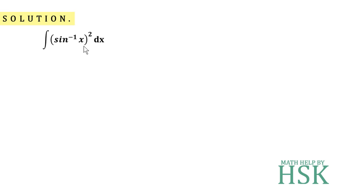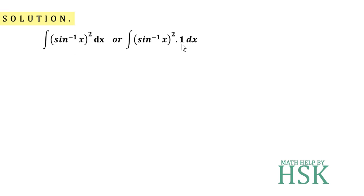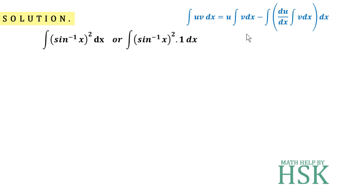This is done in a very tricky manner. The trick is that we are going to take (sin⁻¹x)² as the product of (sin⁻¹x)² and 1. One can be considered as an algebraic function because it can be written as x to the power of zero, and (sin⁻¹x)² is our inverse trigonometric function. So we apply integration by parts between (sin⁻¹x)² and 1.